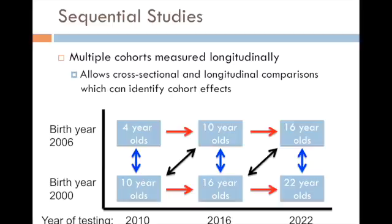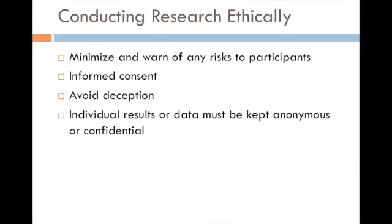Most critically, if we're going to do research, we need to ensure we are conducting ethical research. Because of events in Nazi Germany and during World War II, we have developed standards to minimize risks to participants. We need to warn participants of any risks. Participants must give informed consent — they must know what you're measuring, what variables you're manipulating, and what medications might be given. You can rarely, if ever, deceive participants, because that prevents informed consent. And all data must be anonymous or confidential — you cannot identify participants or share data with identifying information. The goal of research is to help us understand humans, but not when it harms people.